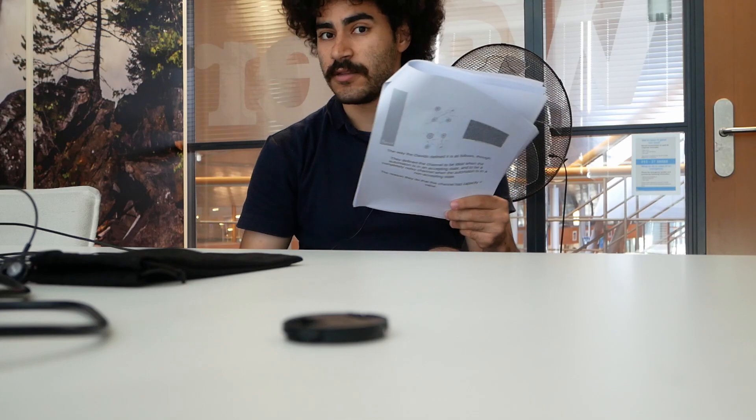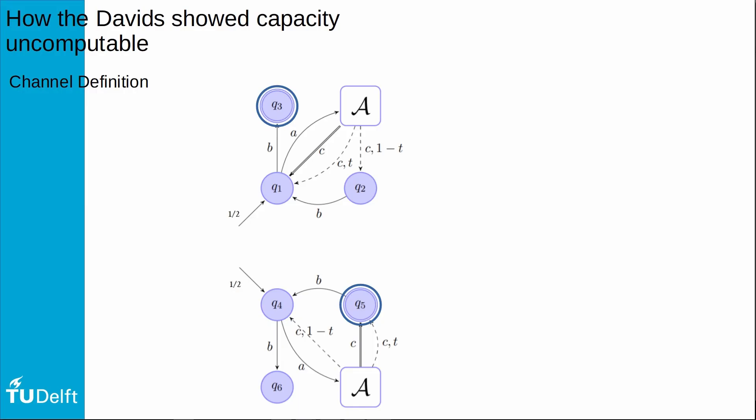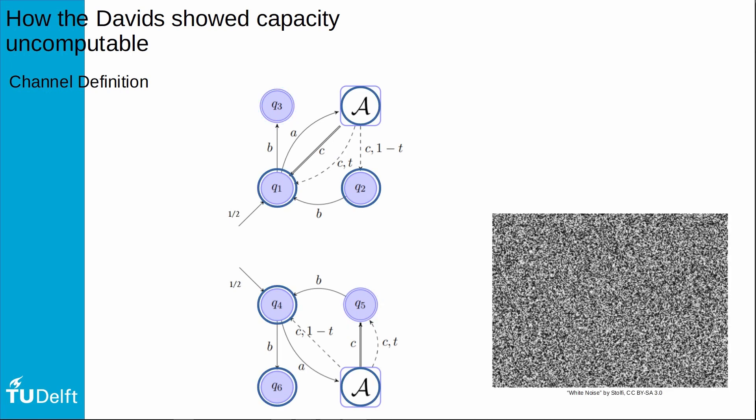The way that the Davids defined it is as follows though. They define the channel to be ideal when the automaton is in an accepting state and to be completely noisy when the automaton is in a non-accepting state.